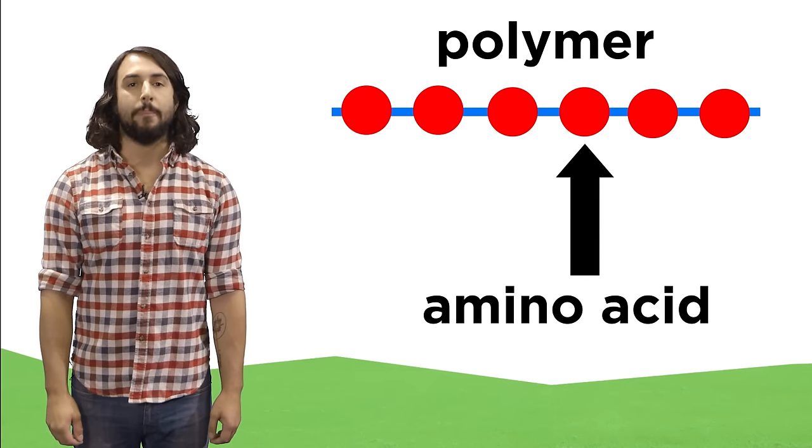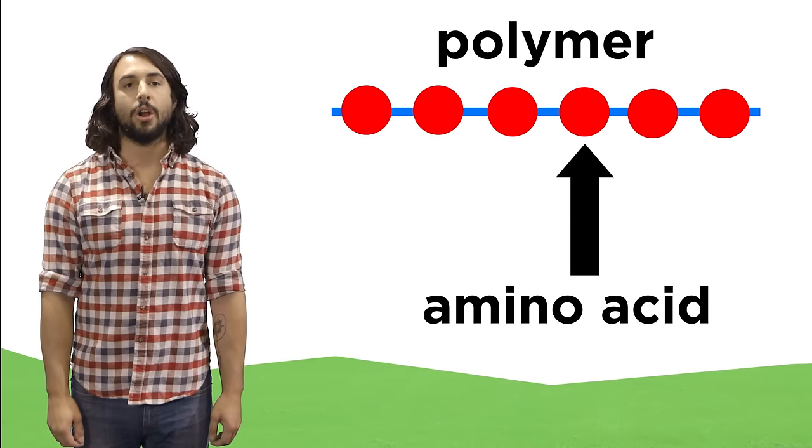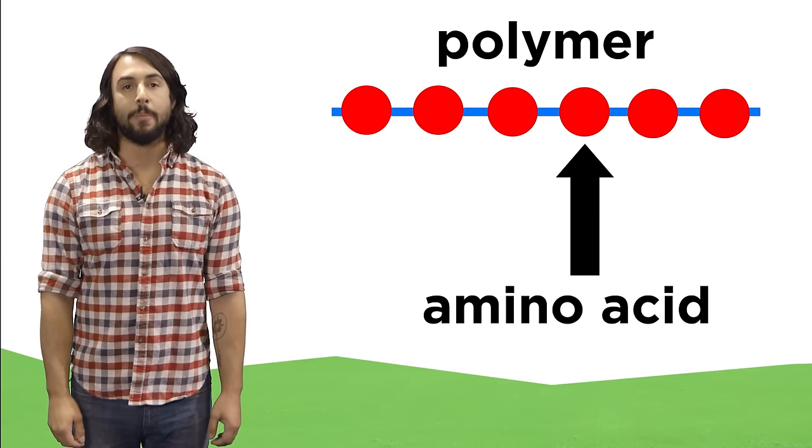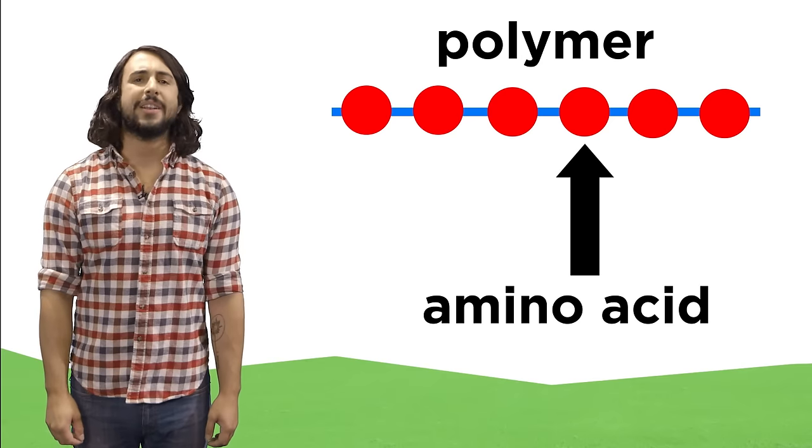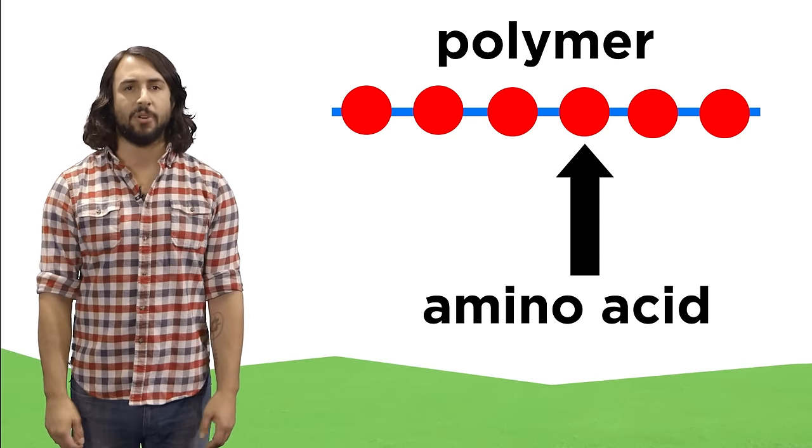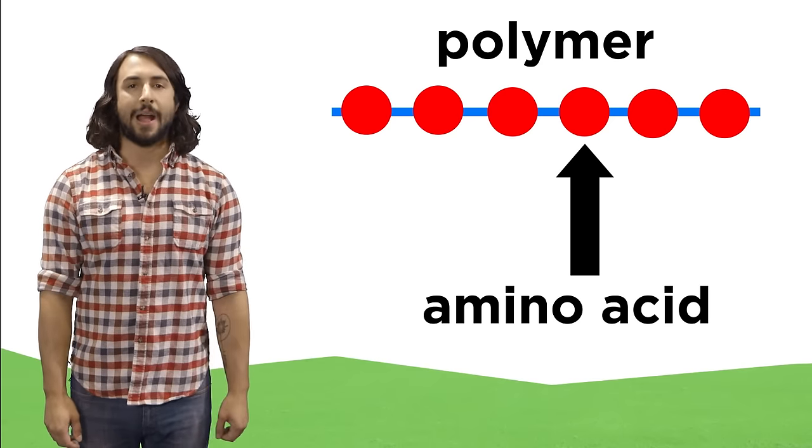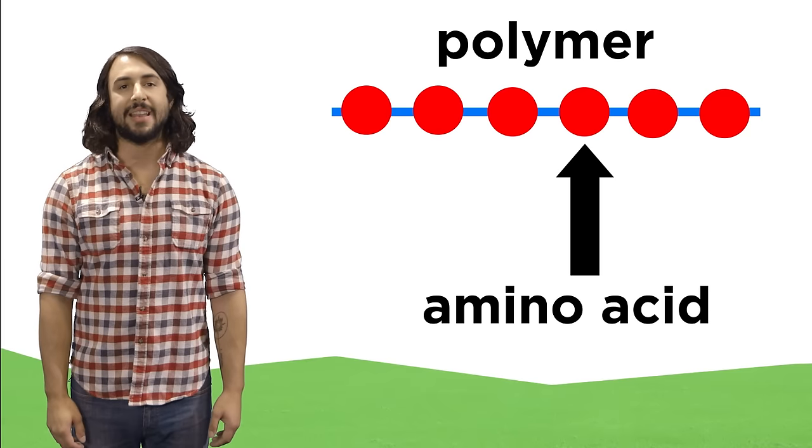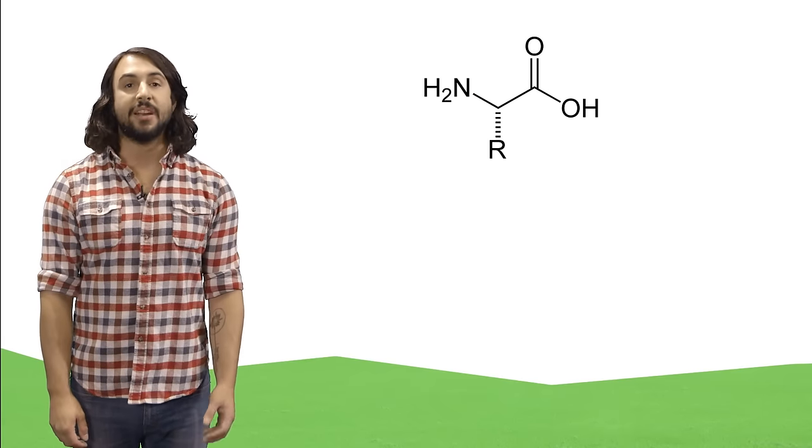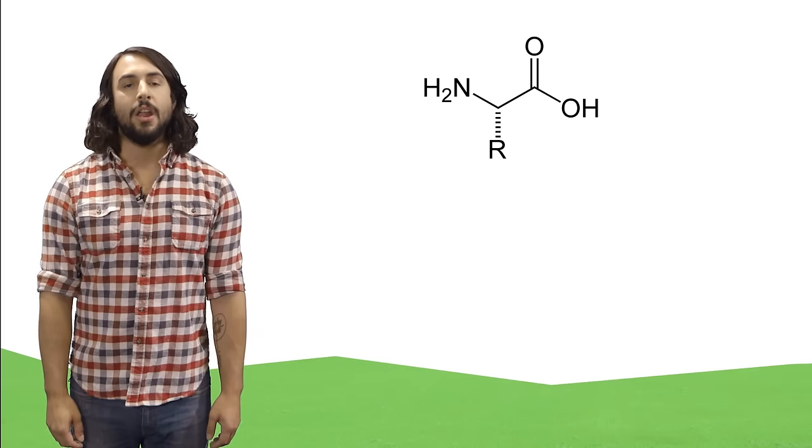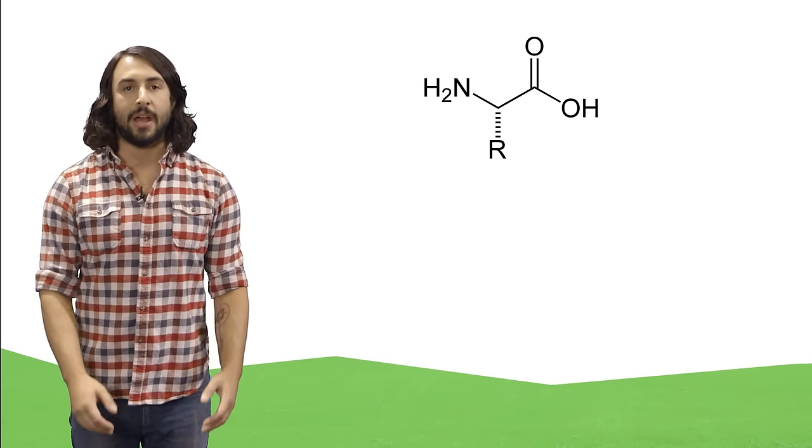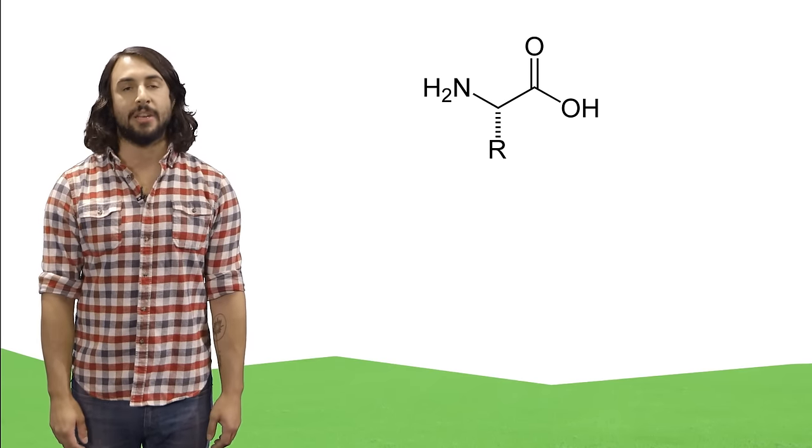So amino acids are monomers, and monomers are the units that join together to form a polymer. How exactly then do amino acids polymerize? Before we learn about that, let's first understand that inside the body, instead of the one structure we've been looking at, there are actually equilibria between different forms of the amino acid.